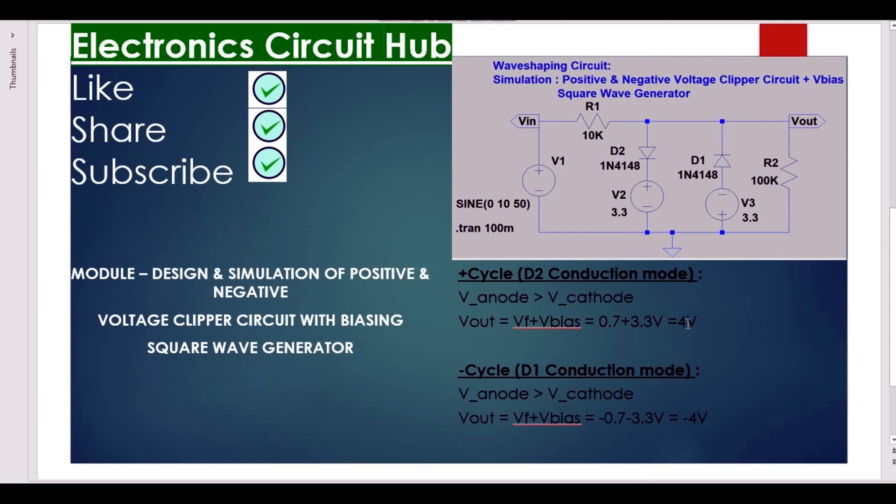If you remove this V2 voltage of 3.3 volts, you will get only 0.7 volts at output.